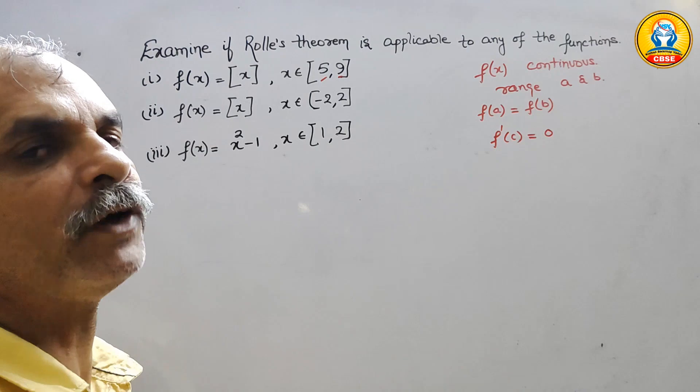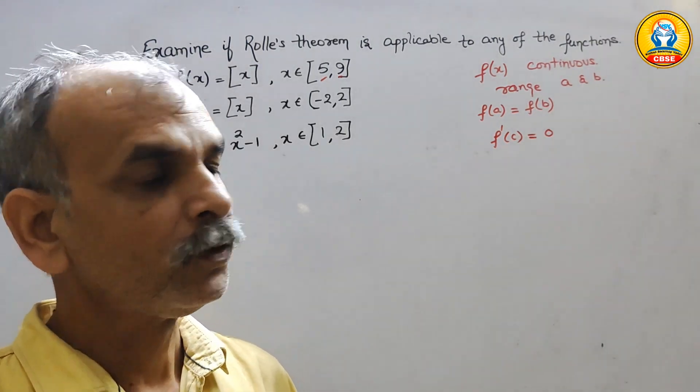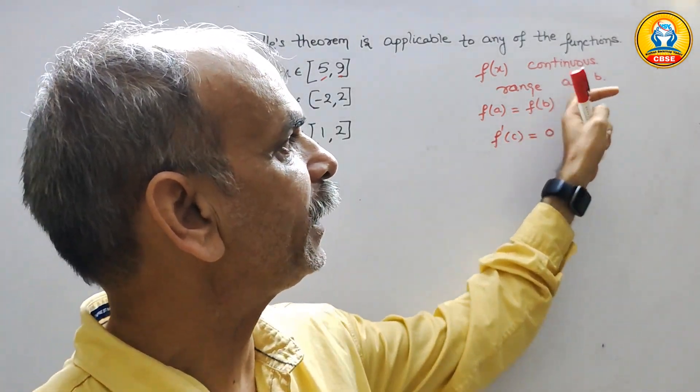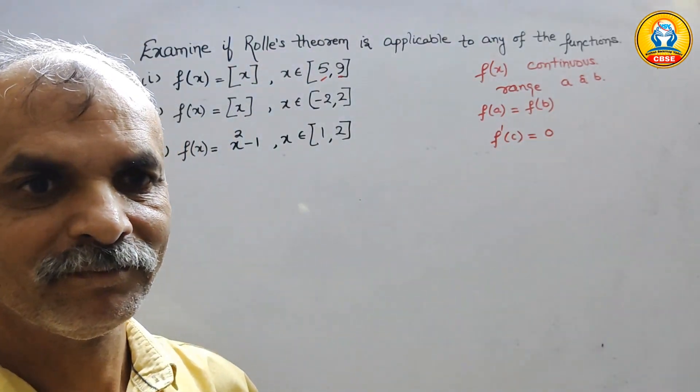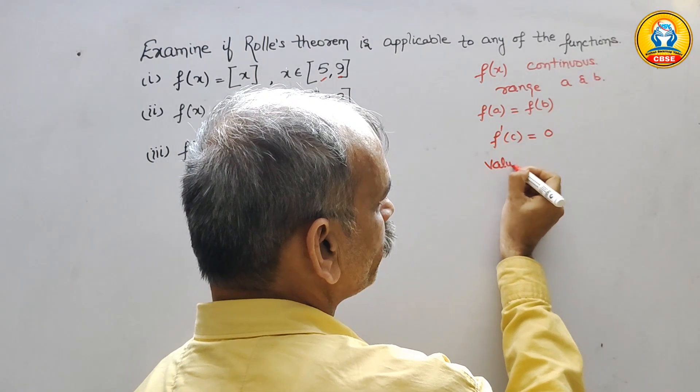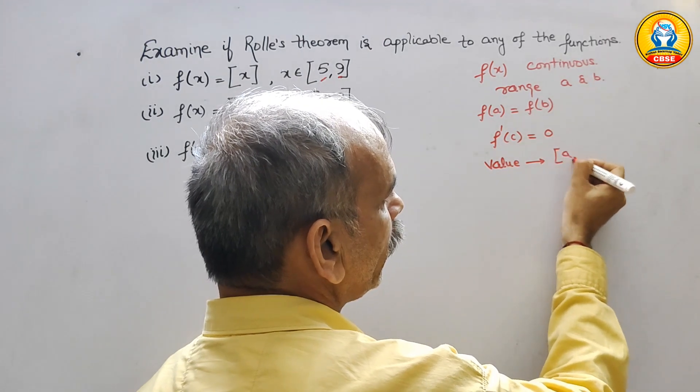We should get some value of X or Y. We should get some value. It should lie between A and B. Now we can say value should lie between A and B.